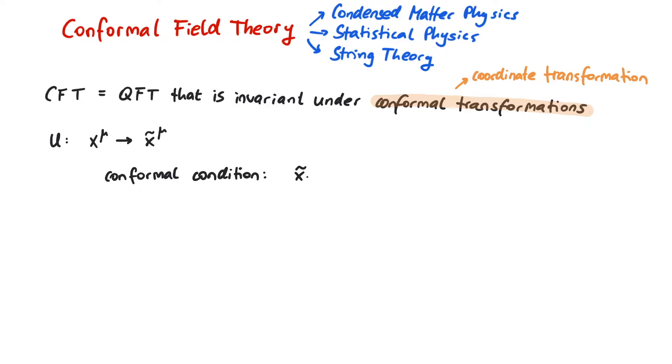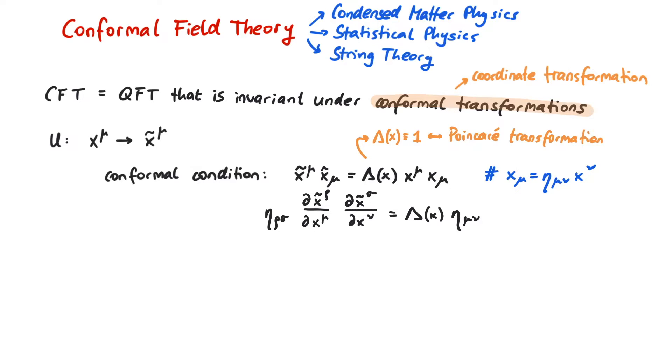Mathematically, this means that x tilde mu x tilde mu is equal to lambda times x mu x mu. We will consider a flat Minkowski space, so the metric tensor is the usual Minkowski metric. This condition can be equivalently stated as eta rho sigma dx tilde rho by dx mu dx tilde sigma by dx nu is equal to lambda times eta mu nu. For the special case lambda is equal to 1, this is the condition for Poincaré transformations.